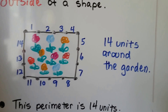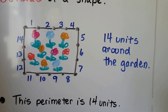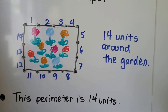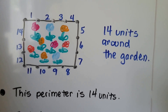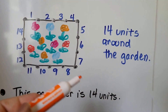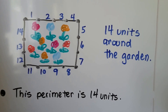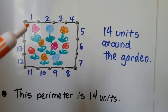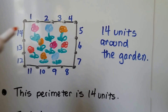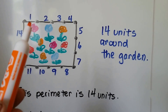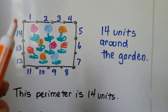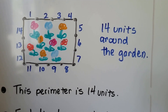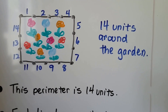If each unit was 12 inches — a foot — we would know if we wanted to buy a fence to put around our garden, we would need 14 feet. If it was a little tiny garden and this was one inch, then it would be 14 inches. If it was one yard, it would be 14 yards. It depends on what the unit of measure is. So this perimeter is 14 units.